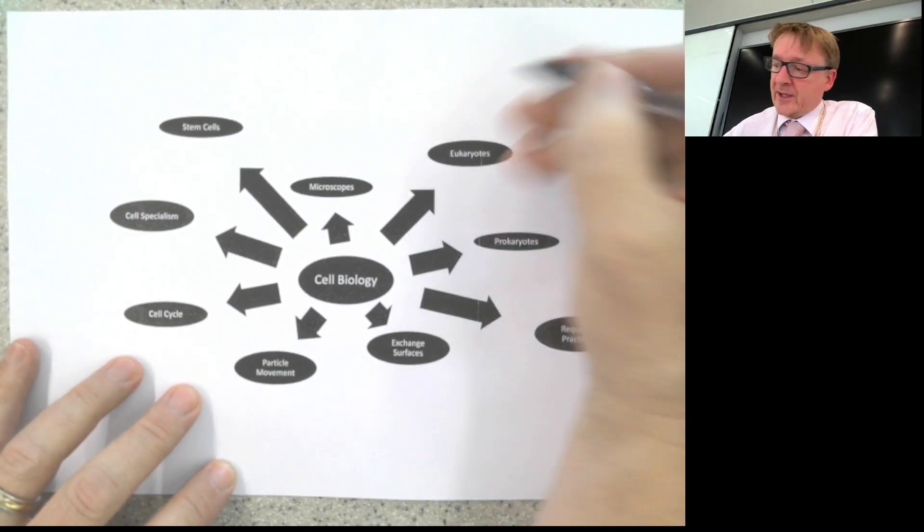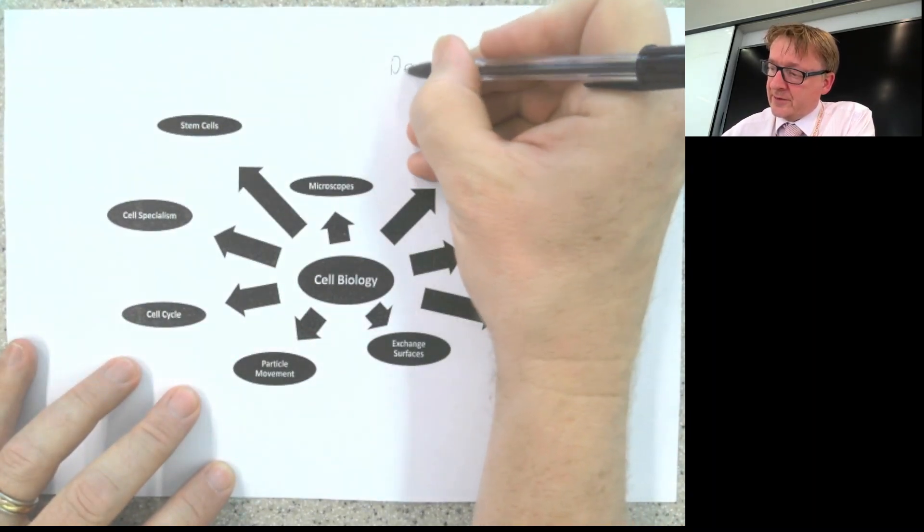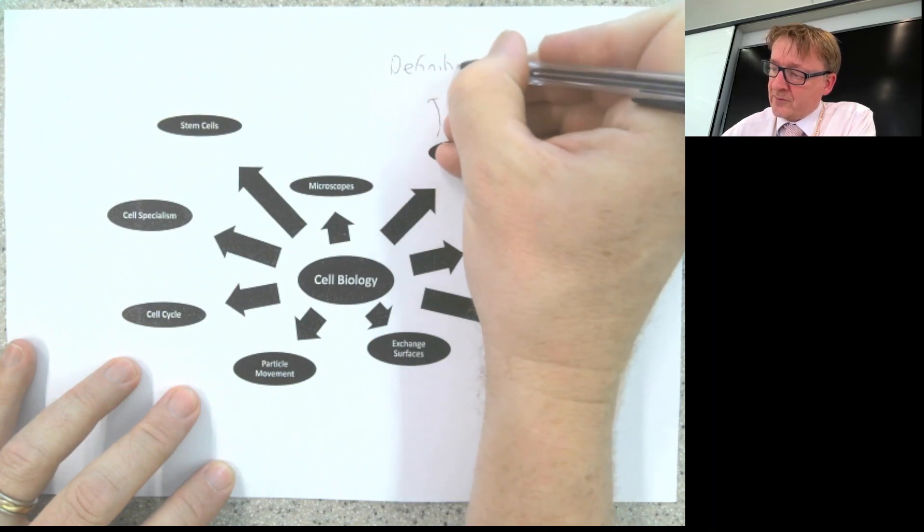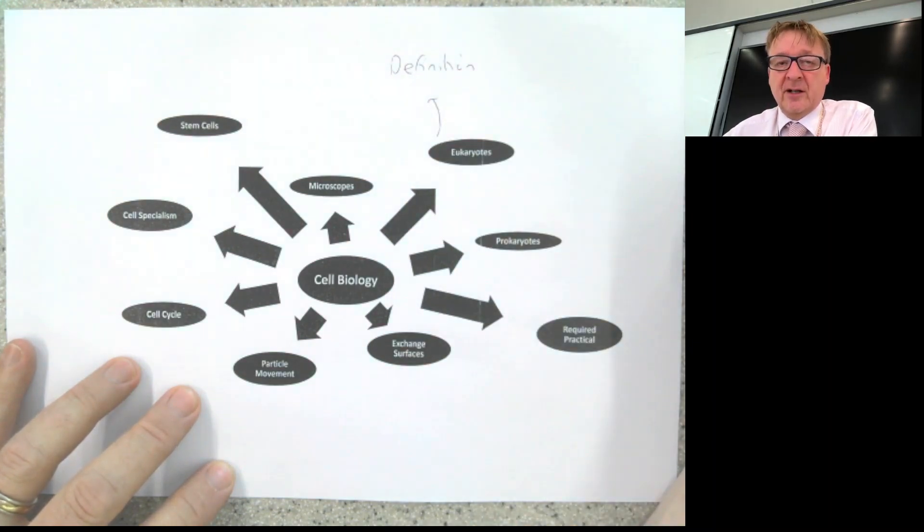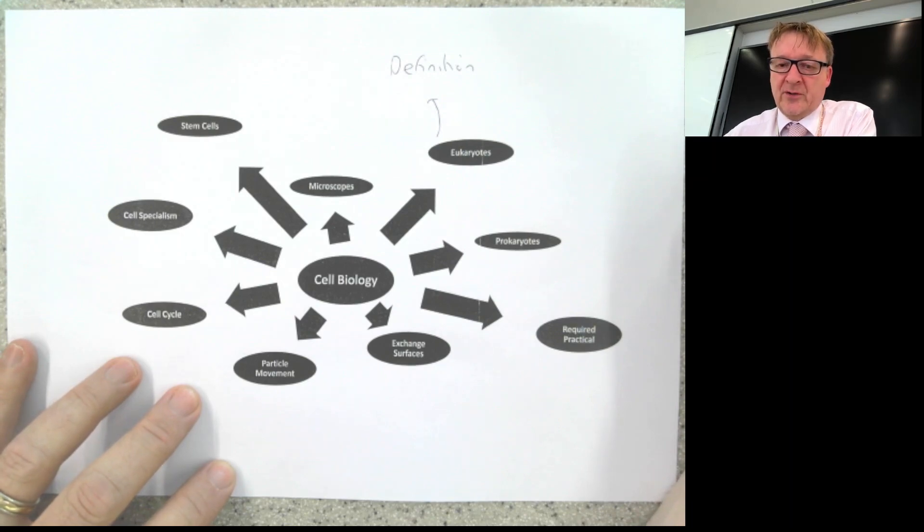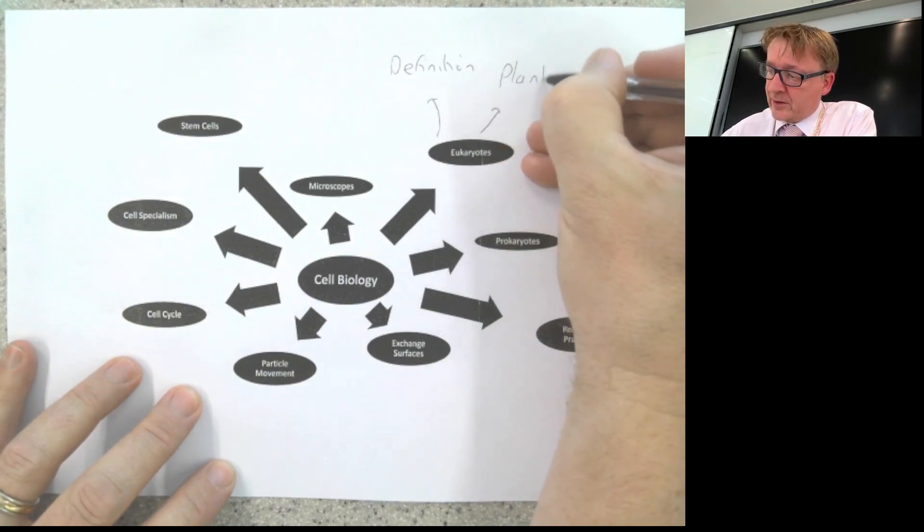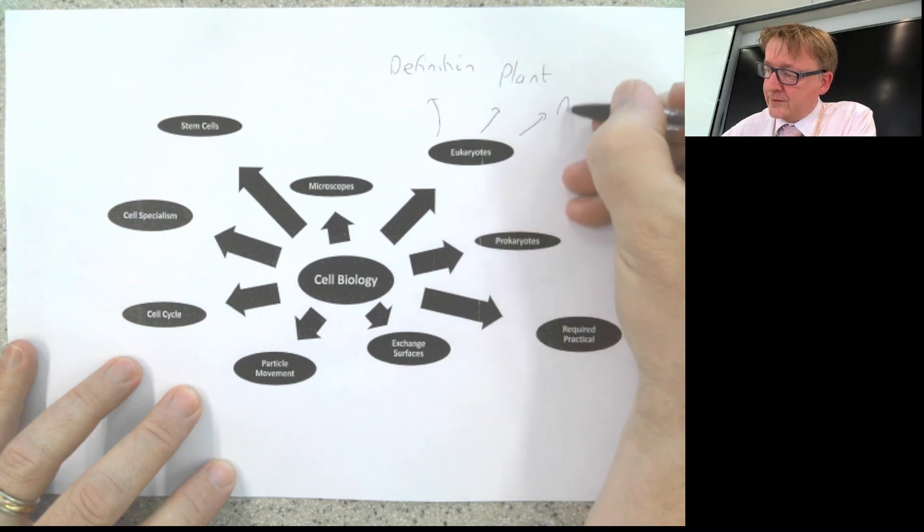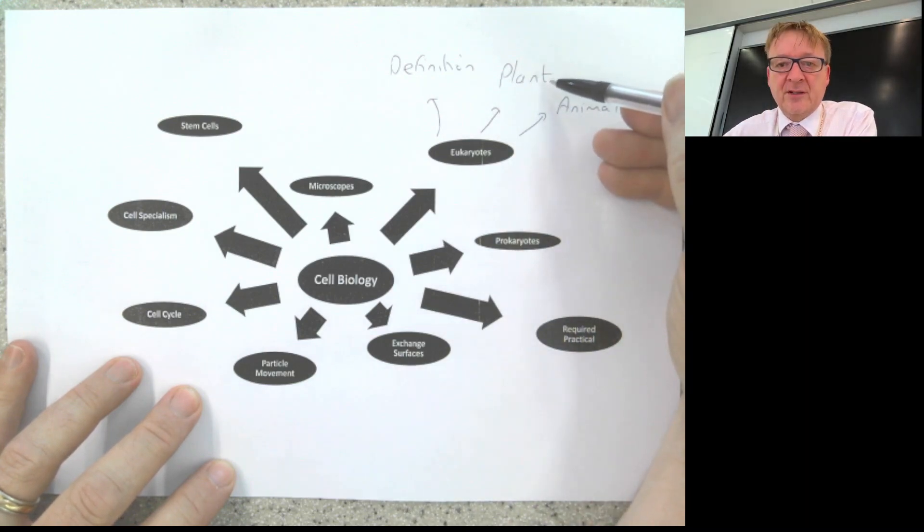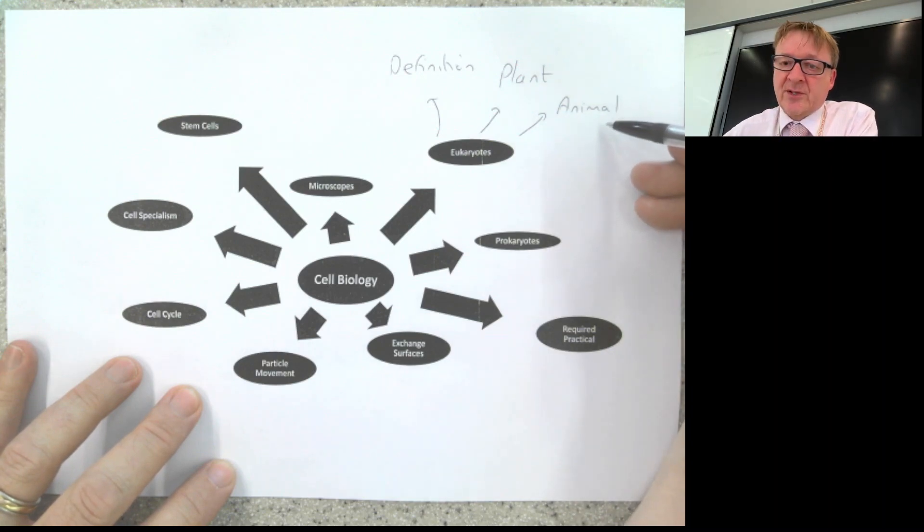Starting off with eukaryotes, you need to have a definition of what a eukaryote is. That's basically something that's got a nucleus and membrane-bound organelles. The two eukaryotes you need to know about are plant and animal. You need to know the structure of the plant cell with all the functions of each individual part, and the structure of the animal cell and the functions of each individual part.